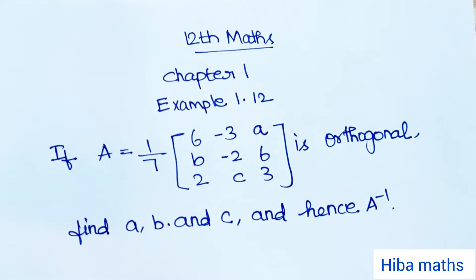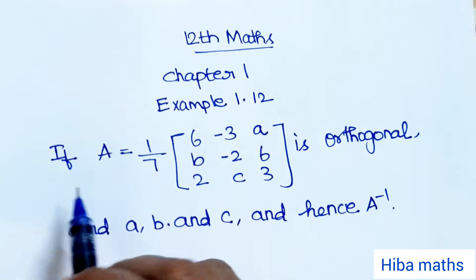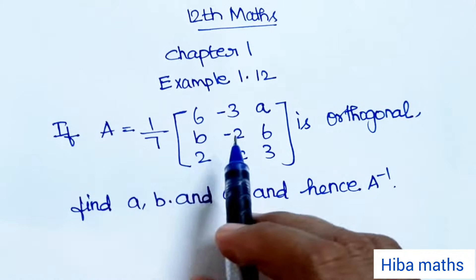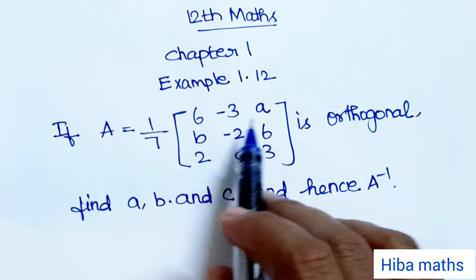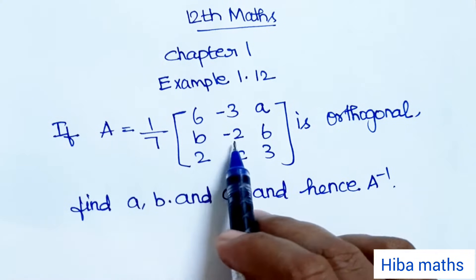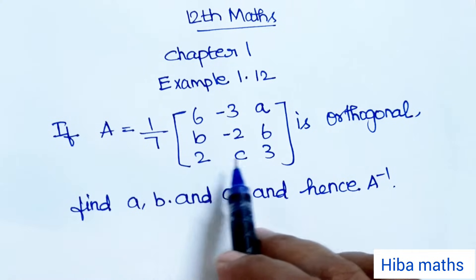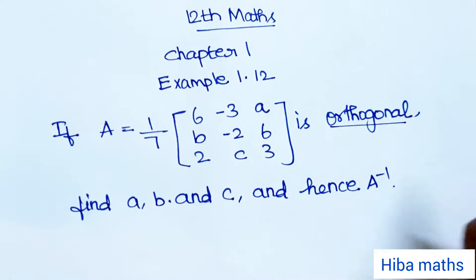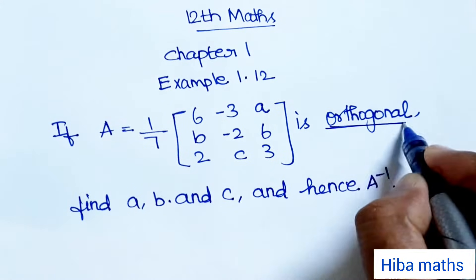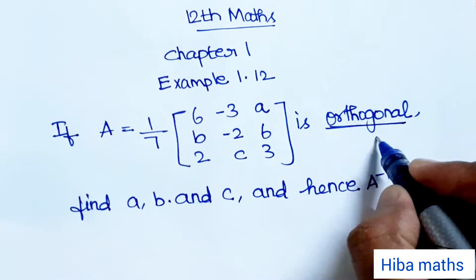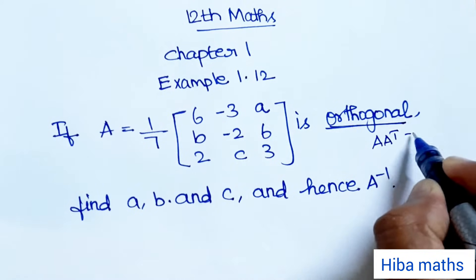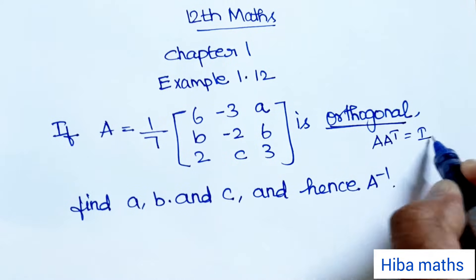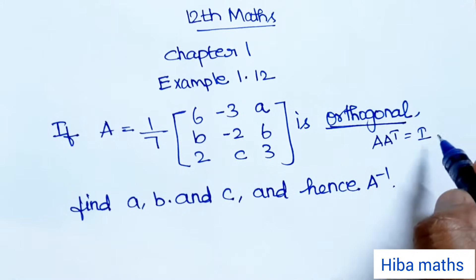Hello students, welcome to Hibamax 12th standard. Chapter 1, Example 1.12: if A is equal to 1 by 7 times the matrix [6, -3a, b; -2, 6, 2; c, 3, ...] is orthogonal. Now, what is orthogonal? A into A transpose equals I matrix — if that holds, it is orthogonal.